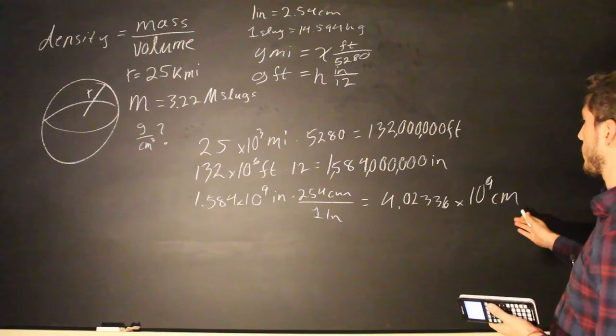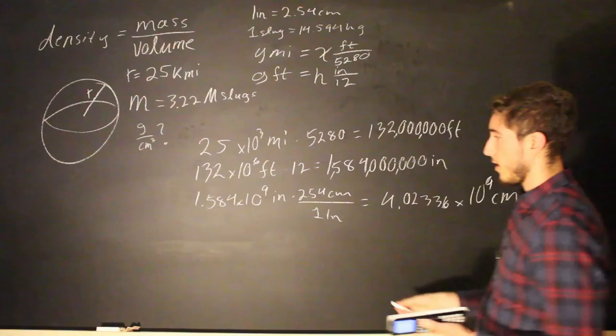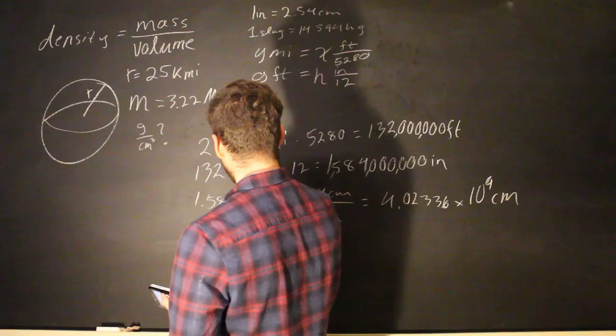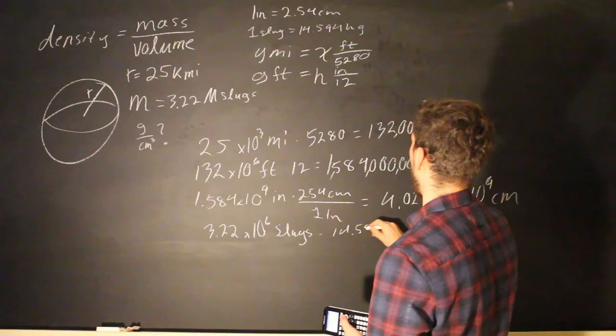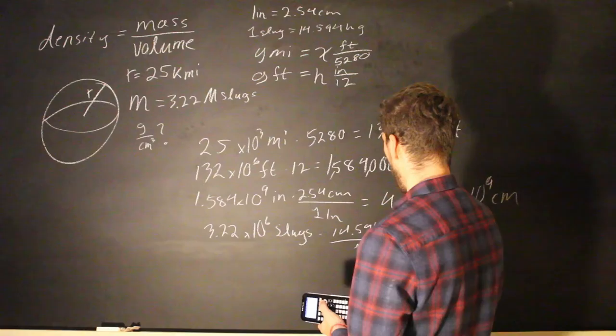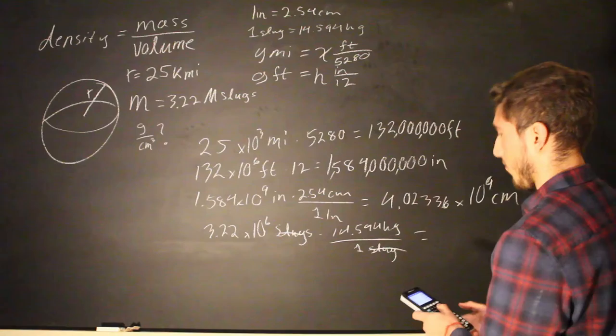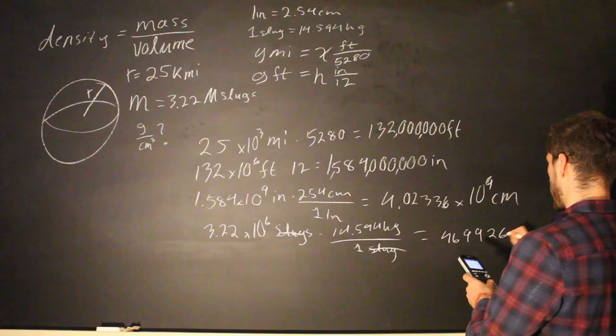And we're going to want to convert the mass from slugs to kilograms, and it's the same conversion from the last video. So, 3.22 times 10 to the sixth slugs times 14.594 kilograms over one slug. The slugs cancel out, and we're going to get 4.699268 times 10 to the seventh kilograms.